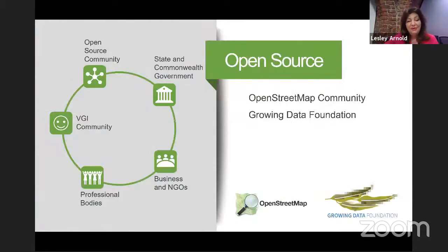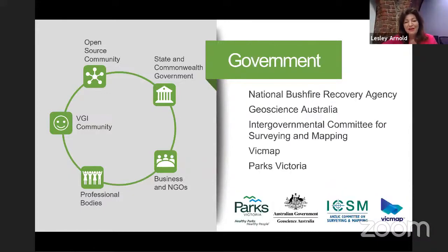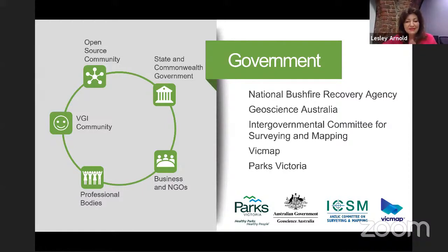The key thing for me, and what I loved about this mapathon, is that it was a joining of all these different communities. The open source community played a big part. The OpenStreetMap community were validators on the day, making sure this data was correct. We needed the support of government, and the data is available as soon as it goes into OpenStreetMap. But we also wanted it to be available to government agencies, and looking at those supply chains was an interesting exercise.